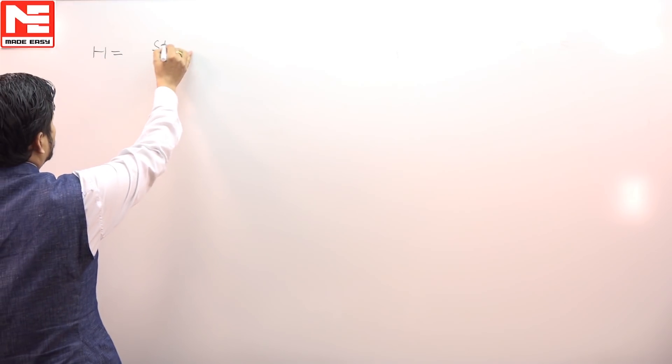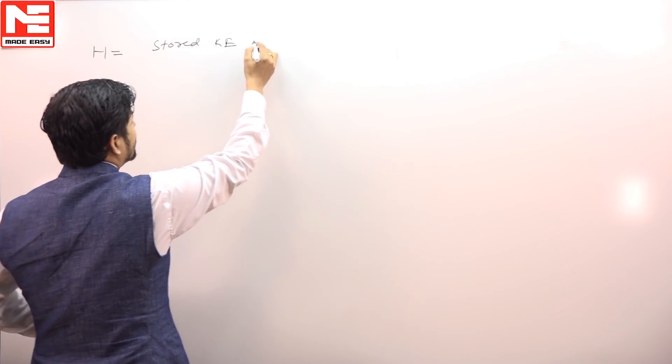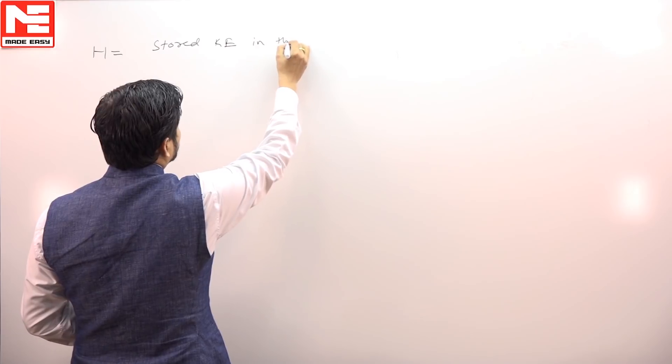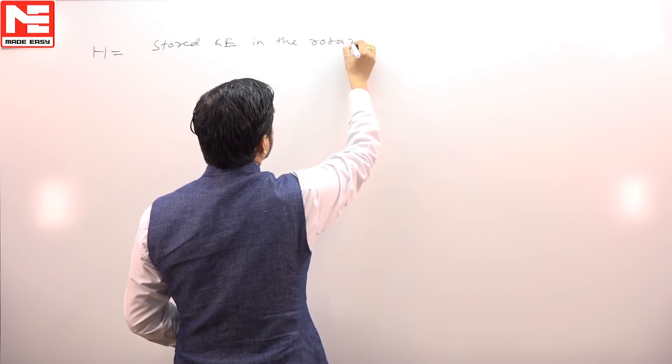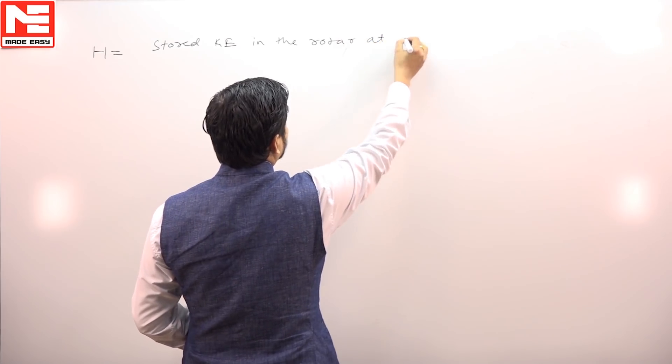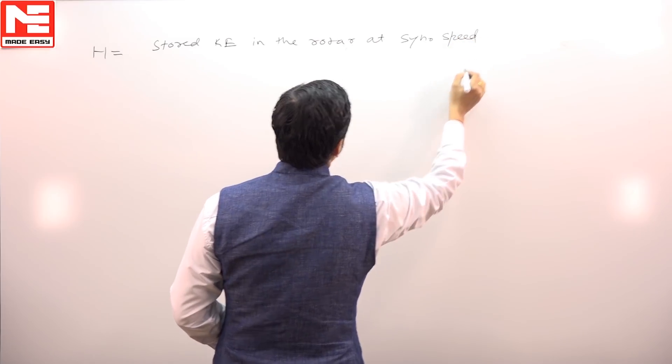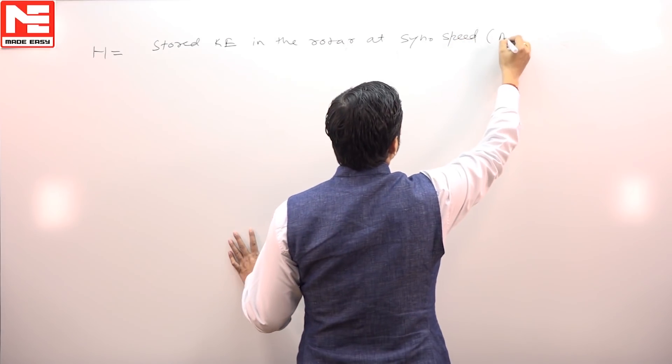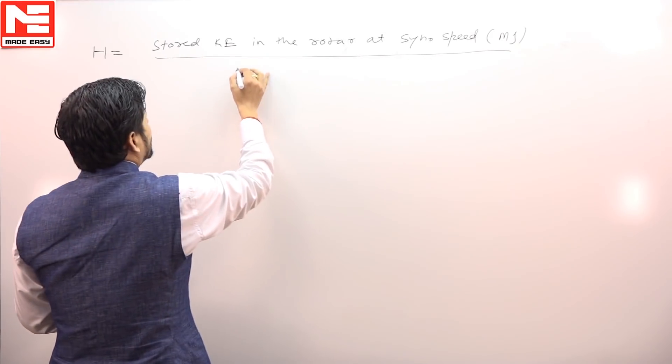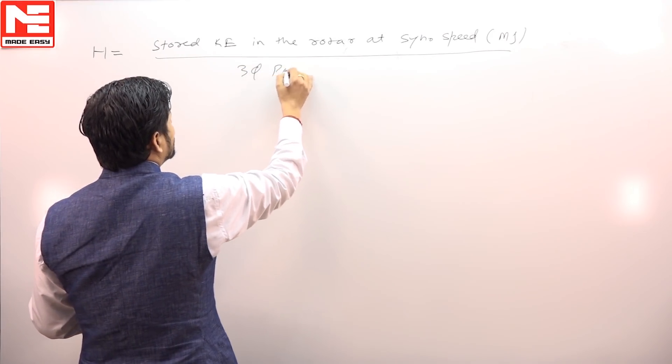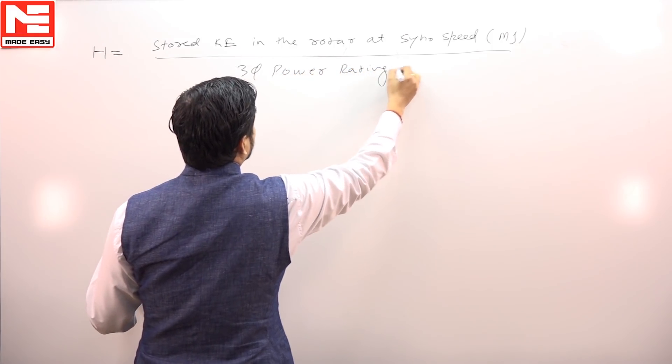It is stored kinetic energy in the rotor at synchronous speed in megajoules divided by 3-phase power rating of the generator in MVA.